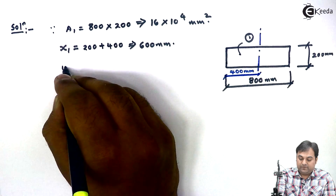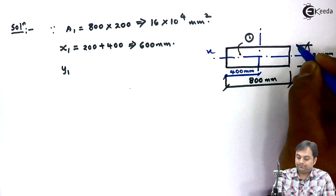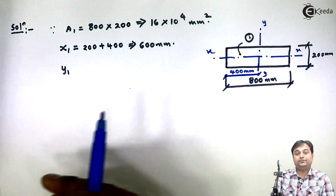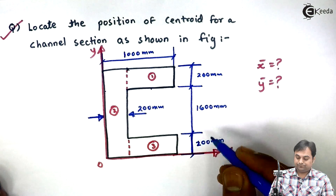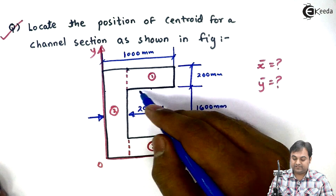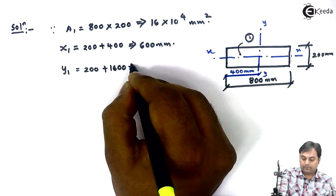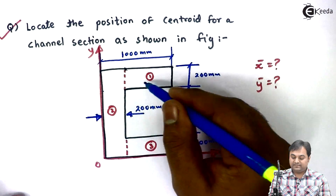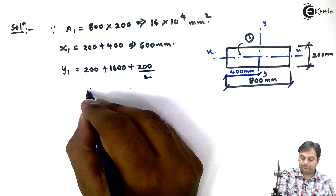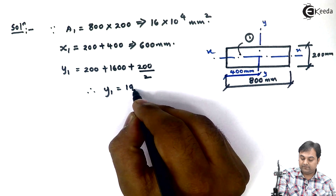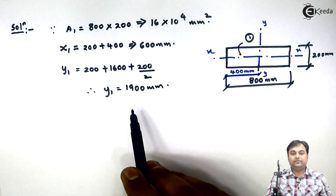Now I will find y1. y1 is the location of the x-axis for the first rectangle. Since we measure distances from the x-axis reference, the first rectangle starts after 200 plus 1600 mm from the origin, and the x-axis of rectangle 1 is at half of 200, which is 100 mm above that. So y1 equals 1900 mm.